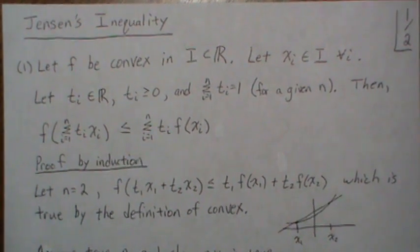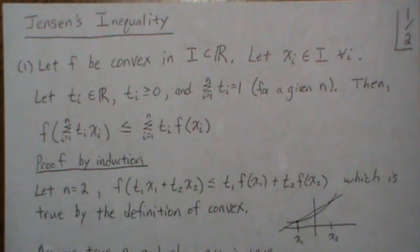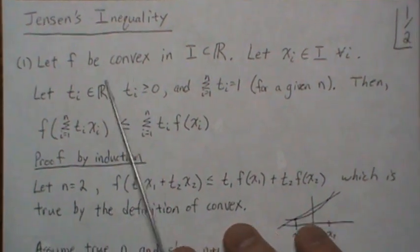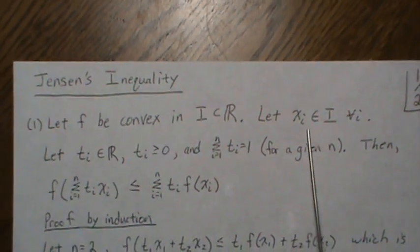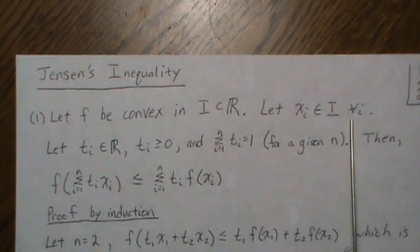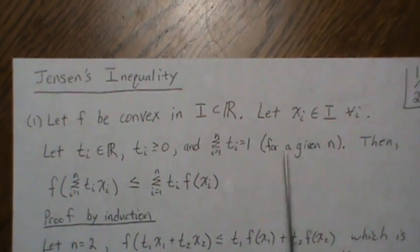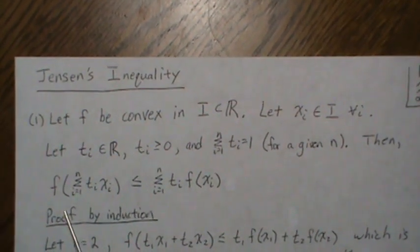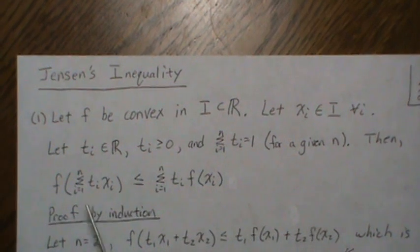In this video we're going to look at two versions of Jensen's inequality and then two applications of each. Here is the first version: we let F be a convex function on some interval I, a subset of the reals. We let each x_i be in this interval for all i, and we let t_i be non-negative real numbers that sum to one.